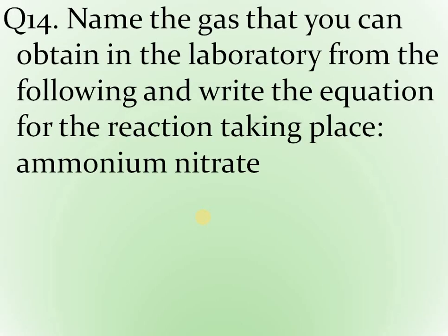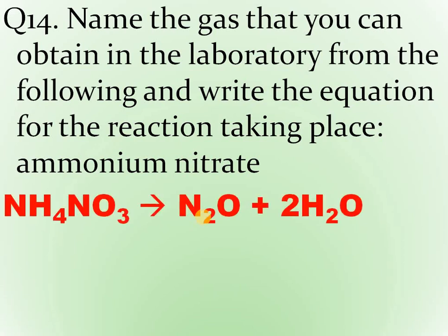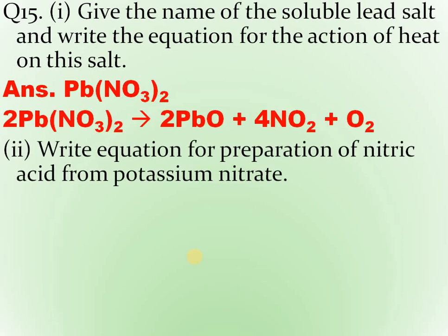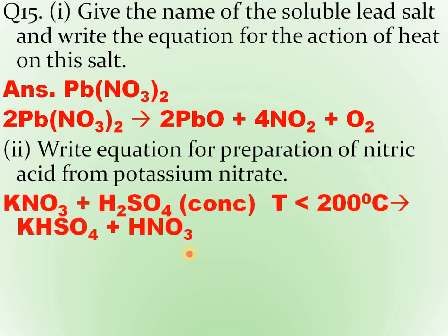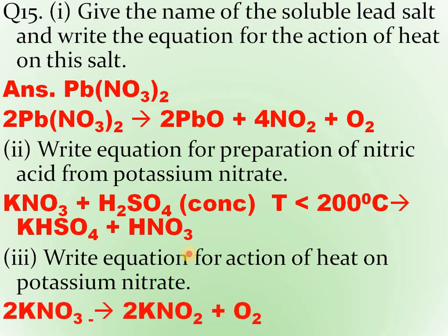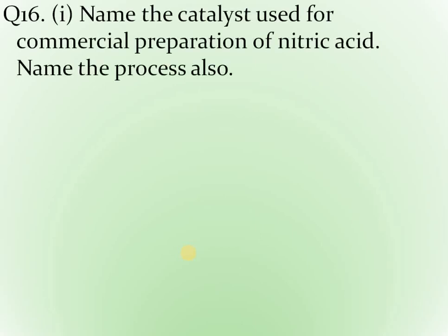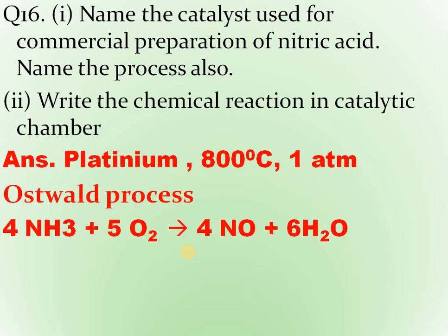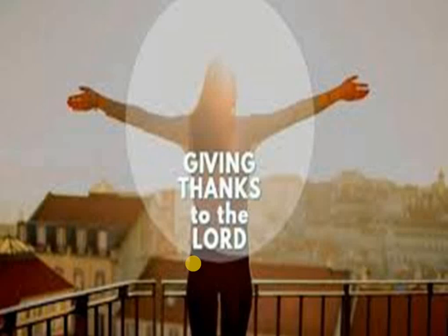Some more typical questions: name the gas obtained from ammonium nitrate heating — N2O, laughing gas. Give the name of a soluble lead salt — lead nitrate (all nitrate salts are soluble). Write the equation for preparation of nitric acid from potassium nitrate — temperature less than 200°C. Action of heat on potassium nitrate gives KNO2 and O2. Catalyst used for commercial preparation of nitric acid is platinum, at 800°C. The process is Oswald process. Main reaction in the catalytic chamber: 4NH3 + 5O2 → 4NO + 6H2O. Thank you to the Almighty God — by His blessing we are able to complete this. Thank you very much.